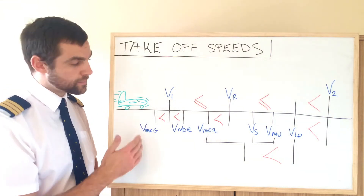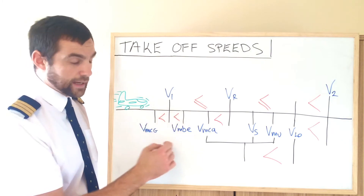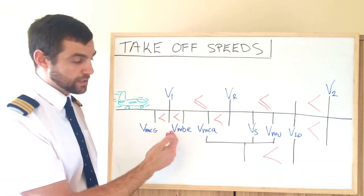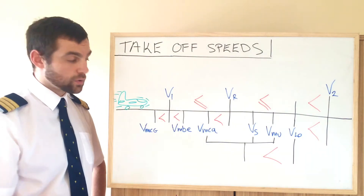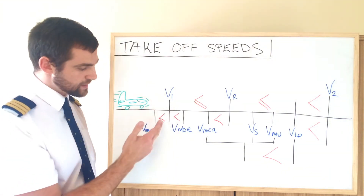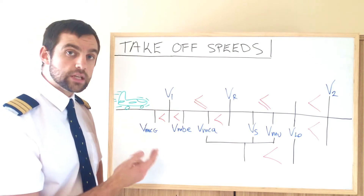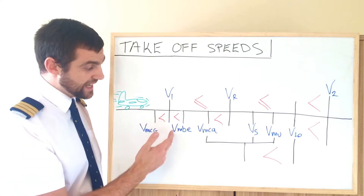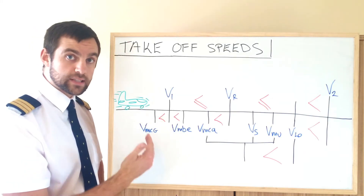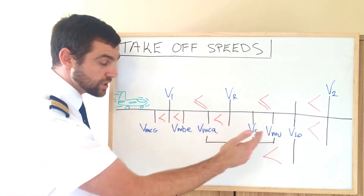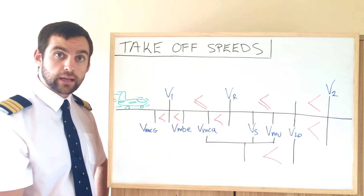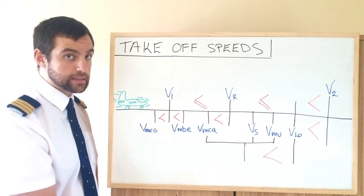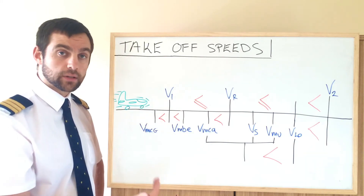So let's talk about the relationship between the speeds. The black lines and the red greater-than, less-than, or equal-to symbols in between the lines indicate these relationships. V1 has to be greater than VMCG, because we need directional control in order to make a decision. It must be less than VMBE — otherwise, if we initiated a brake within that margin, we could run the risk of brake failure. And V1 has to be less than or equal to VR — the decision speed cannot come later than VR, but it could coincide.